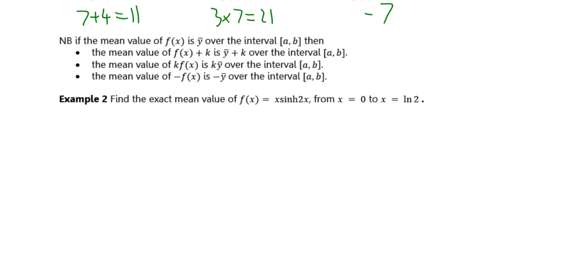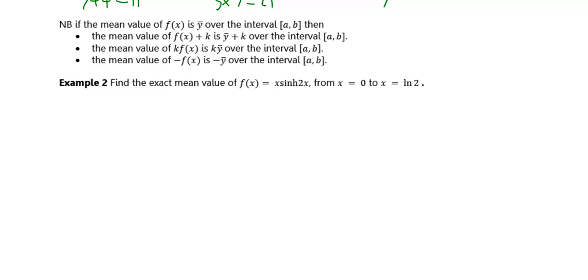I'm going to go through one more example, which is perhaps more illustrative of something you could be asked to do. Find the exact mean value of f of x is x sinh 2x, from x is 0 to x is ln2, find the exact value. The mean of this function is 1 over the width of the interval, which is ln2 take away 0, times the integral from 0 to ln2 of x sinh 2x dx.